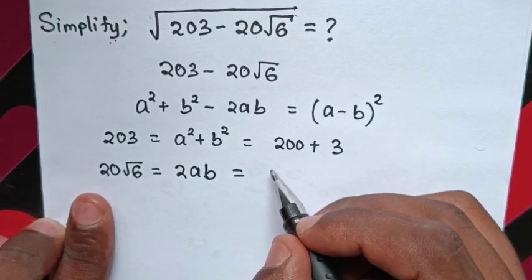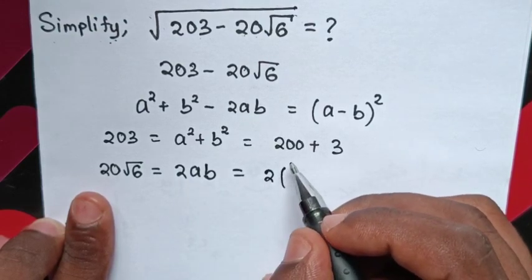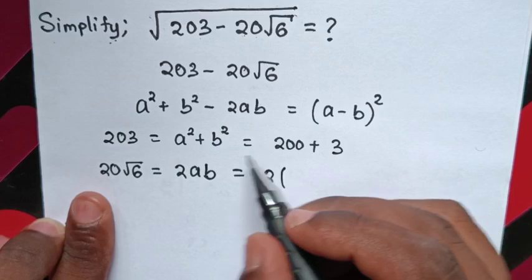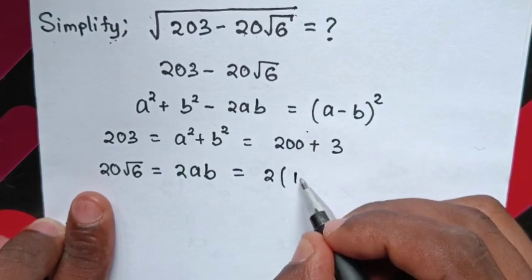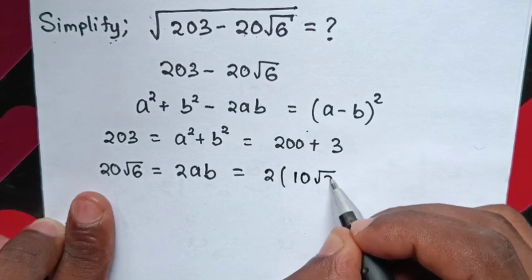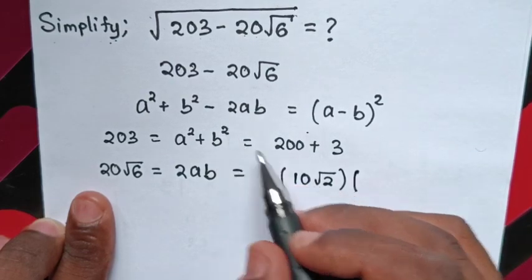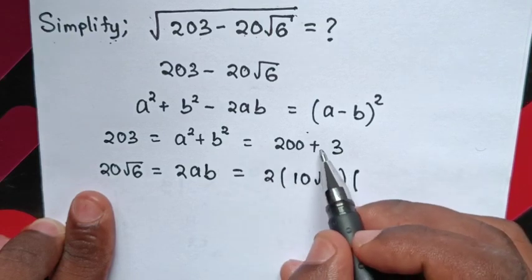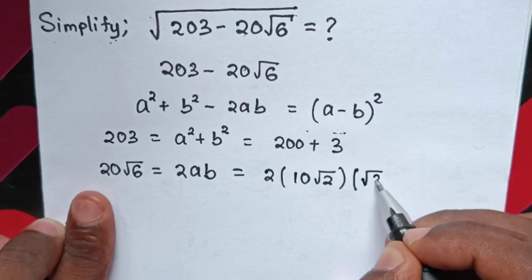This will be equal to 2 times a times b. From here, a square is 200, so we will apply square root, then it will be 10 square root of 2. And b, from b square is equal to 3, so we will apply square root on both sides, then b will be square root of 3.